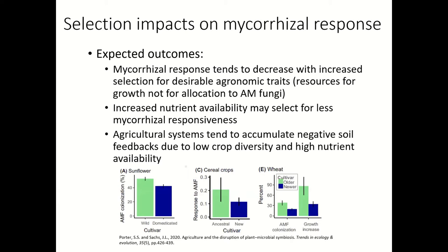When we began to think about these studies, we went through the literature and had several conversations about some expected outcomes. What's going to happen with Kernza — it's a moving target, right? As all the selection is going on and different traits are being selected for, what's going to happen to mycorrhizal responsiveness? Well, in the past, as other crop species are domesticated, there's a typical trend of decreasing mycorrhizal responsiveness.